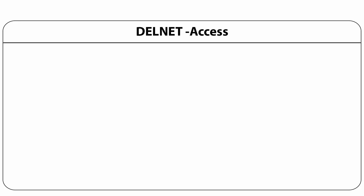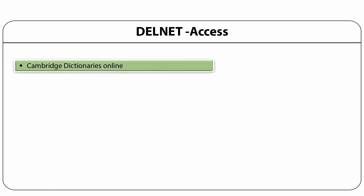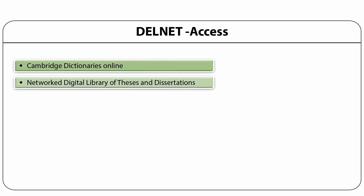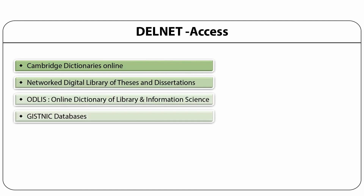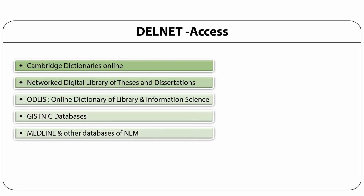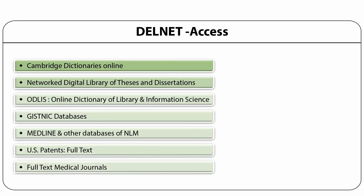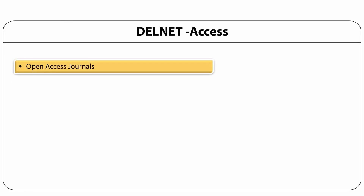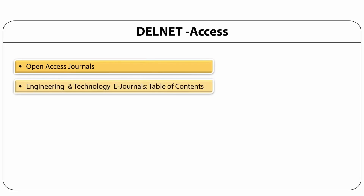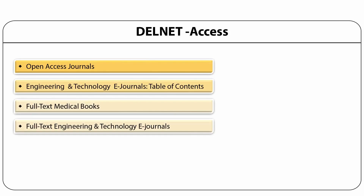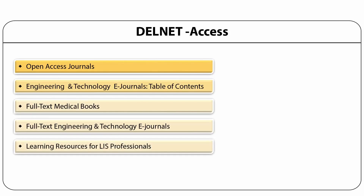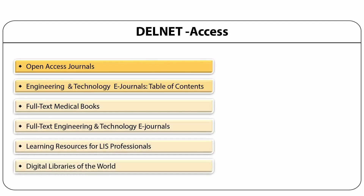DELNET provides access to various online resources on a consortia basis like Cambridge Dictionaries Online, Networked Digital Library of Theses and Dissertations, Online Dictionary of Library and Information Science, GIST, NIC databases, MEDLINE and other NML databases. It also provides access to US patents, full-text medical journals, open-access journals, engineering and technology e-journals, table of contents, full-text medical books, e-learning resources for LIS professionals, and digital libraries of the world.